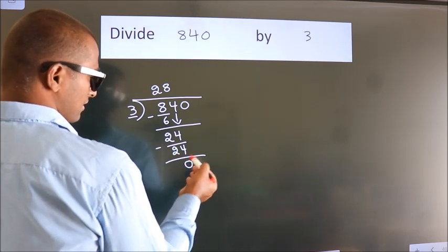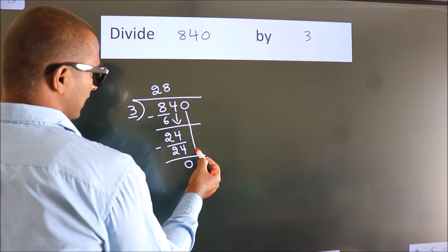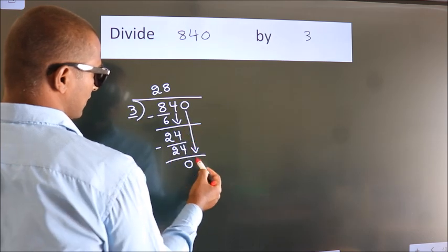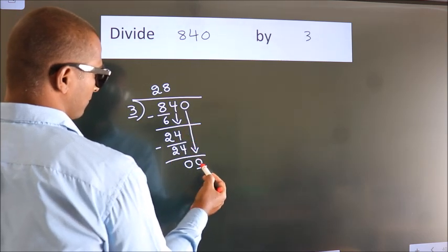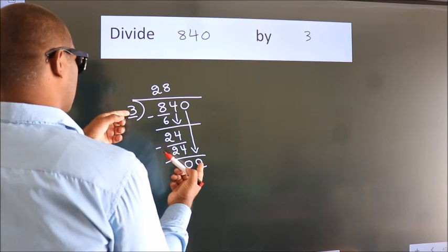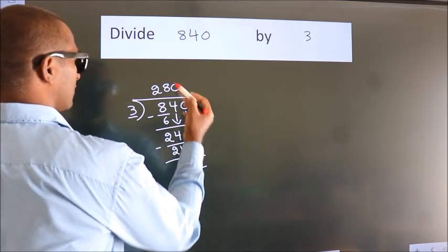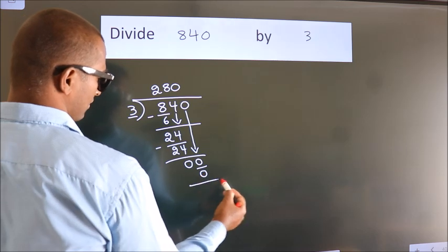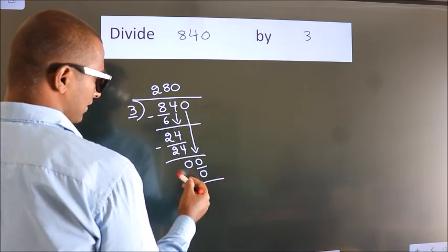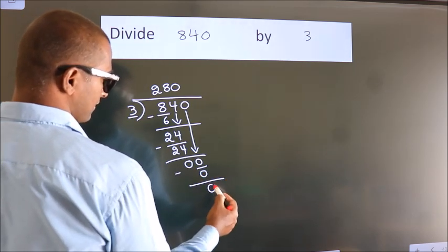After this, bring down the beside number. So, 0 down. So, 0. When do we get 0? In 3 table, 3 times 0 is 0. Now we subtract. We get 0.